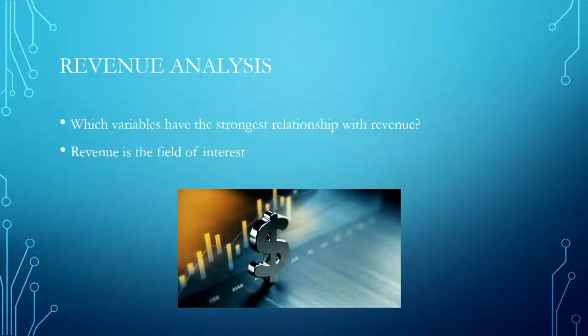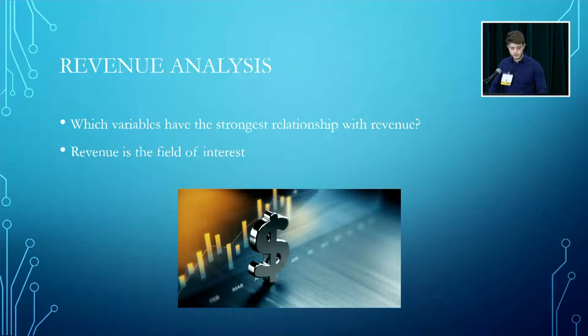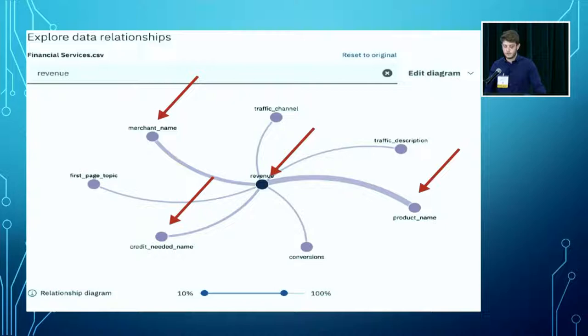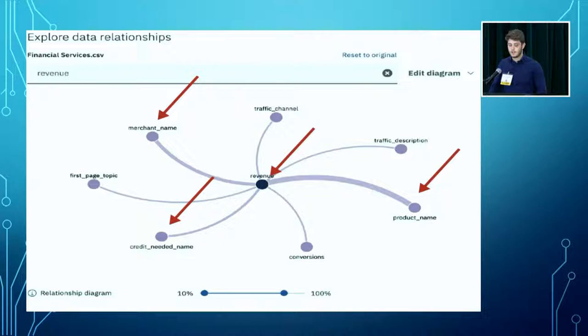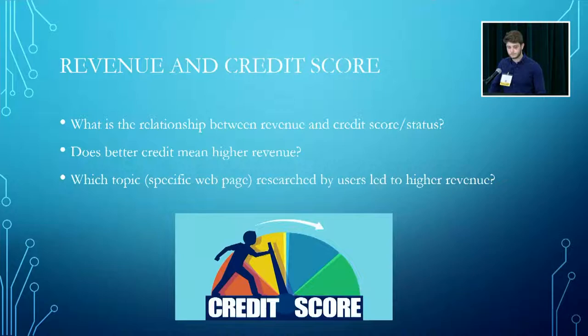Now we're going to look into revenue analysis to see which variables have the stronger relationship with revenue — revenue is our field of interest, shown as the circle in the middle with variables around it. The thicker the line, the stronger the relationship between the variable and revenue. We can see that the merchant, the product, and the credit status requested for filling out the application are the variables that have the strongest relationship with revenue.